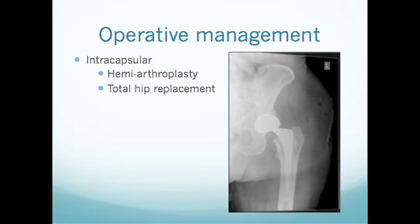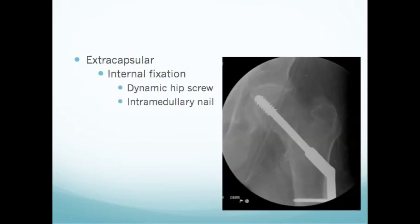For extracapsular fractures, because the blood supply is still intact and the capsule has not been disrupted, the risk of avascular necrosis is absent. We can therefore fix the fracture with internal fixation. Commonly this is a DHS — a dynamic hip screw — or an intramedullary nail, commonly called a gamma nail.